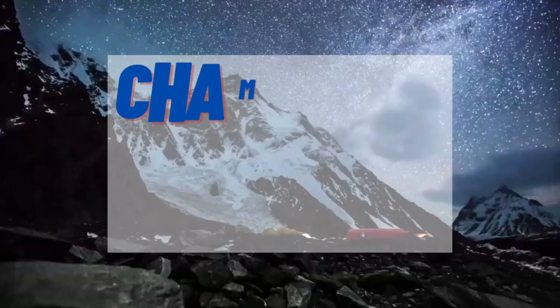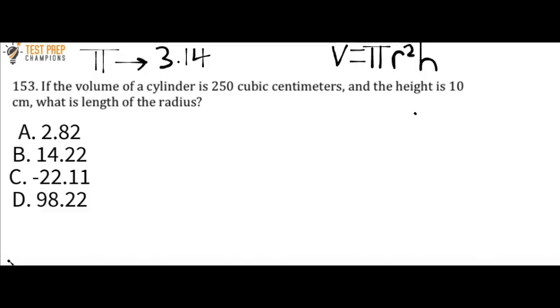So this next question is the champion's challenge question for the video. If the volume of a cylinder is 250 cubic centimeters and the height is 10 centimeters, what is the length of the radius? Is it A, B, C, or D? Now two things to note here. One is that for your test, you're going to want to memorize that pi is 3.14. It's not really equal to 3.14, but it's close enough. So pi is approximately 3.14. So you will want to know this for your test for doing calculations.